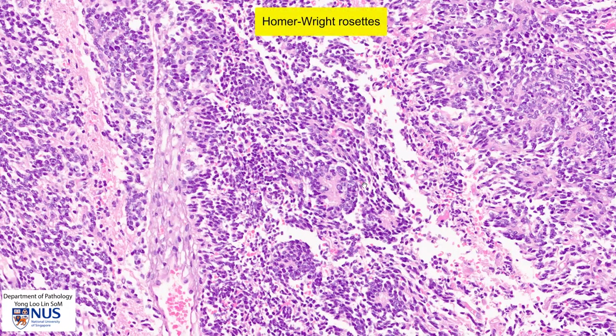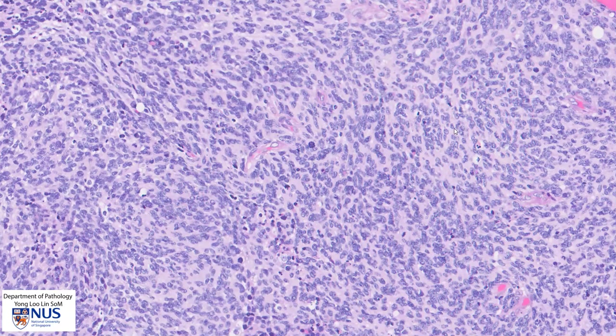Homer-Wright rosettes are not exclusive to medulloblastoma — they can be seen in other embryonal tumors such as neuroblastoma and retinoblastoma. In summary, this is an example of a medulloblastoma: an embryonal primary CNS tumor that occurs in the posterior fossa, more frequently in children, and this is a WHO grade 4 tumor.